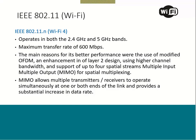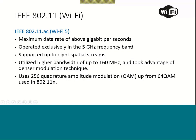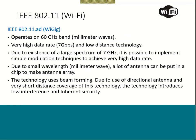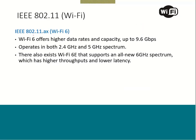Going ahead in the Wi-Fi standards, we also discussed 802.11ac, which offers data rates in gigabits per second. Then we talked about 802.11ad, also called WiGig, which operates at a very high frequency. As I previously explained, lambda equals 1 over F, which is why it is called millimeter wave technology — because the frequency is very high at 60 GHz. And then I also mentioned 802.11ax.